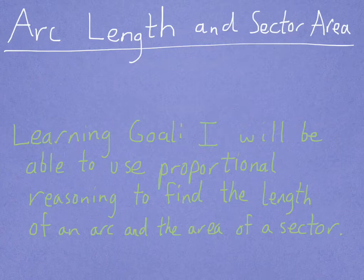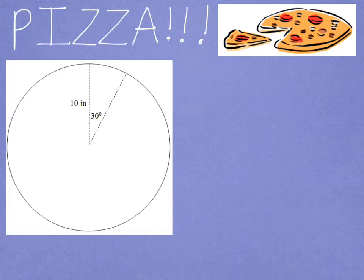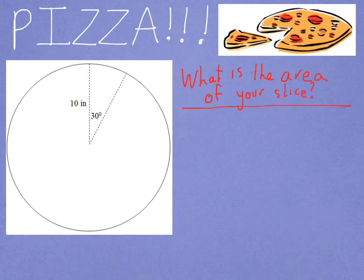Consider as a possible scenario for this kind of concept: pizza! I sincerely hope that none of you are hungry while watching this video. Consider that maybe you and your family go out to eat pizza. You, being a true math nerd, get out your protractor and measure the angle of your slice of pizza — that's the central angle. You also grab a ruler and measure the radius of the pizza to be 10 inches. So our question is: what is the area of your slice of pizza?